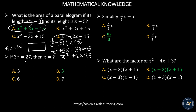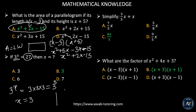The next problem: if 3 to the power x equals 27, then x equals what? The first thing you do is convert the right side in terms of 3. So 27 equals 3 times 3 times 3, which is 3 to the third power. Now you can say x equals 3. The rule is: if a to the power x equals a to the power n, then x equals n.